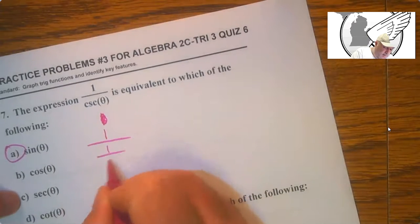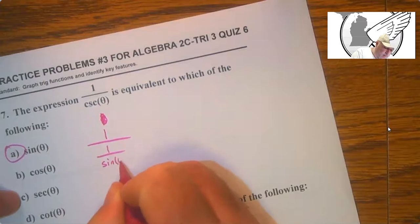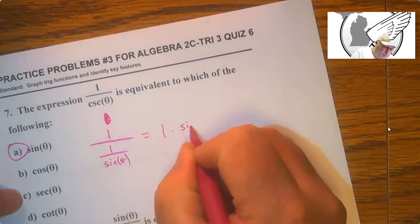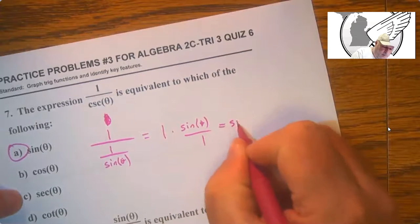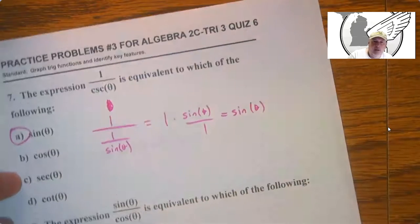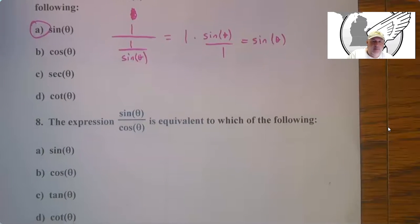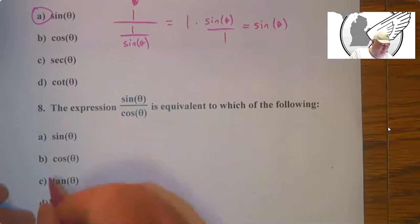So you could have this like this. And then you flip and multiply. So there's your work. If you wanted. 1 over 1 over sine is sine. Sine over cosine. That's just a straight lookup. Tangent.